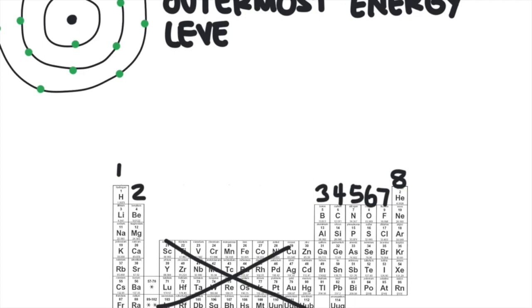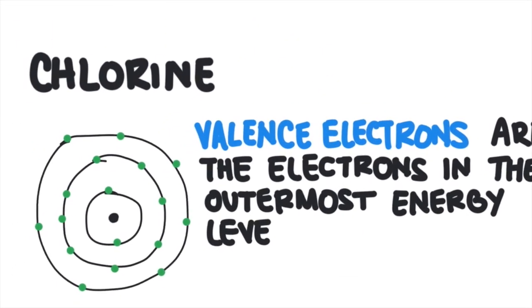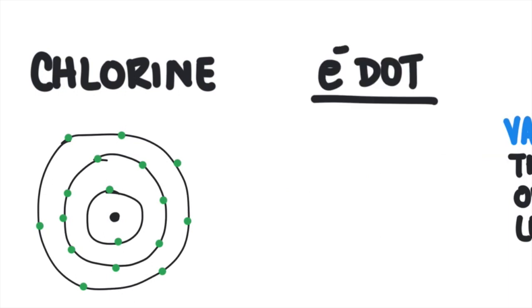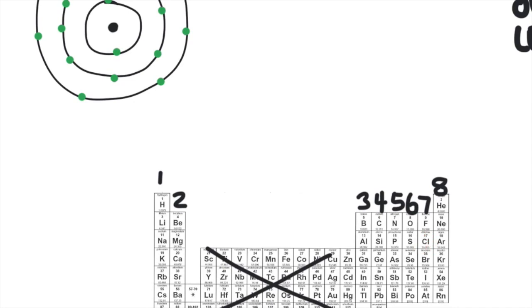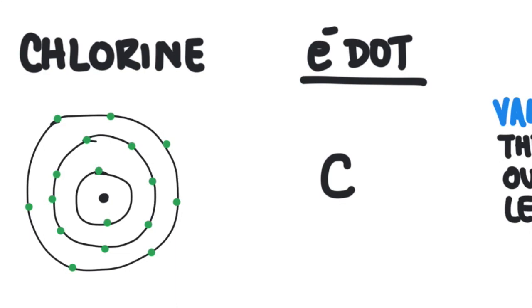Generally, we don't really need to draw complete Bohr diagrams. Instead, we can just draw Lewis structures, also known as electron dot structures. Electron dot structures only show the valence electrons. Let's draw the electron dot structure for chlorine. Chlorine is in group 7, so it has 7 valence electrons — we can also see this in the Bohr diagram. To draw an electron dot structure, we first write the symbol for the element, which is Cl for chlorine. Then we place little dots around the symbol to represent the electrons. We want to keep our electron dot structure symmetrical, so if we picture the symbol inside a little box, each side of the box can contain two electrons. Electrons want to be paired up, and so the electron dot structure for chlorine will have 7 little dots representing the 7 valence electrons around the symbol.